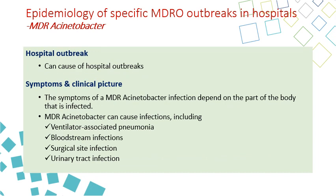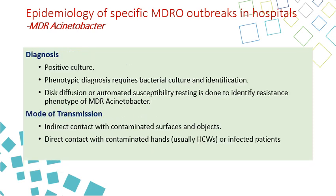Hospital outbreaks can be caused by Acinetobacter, and the symptoms depend on the body site affected. Common infections include VAP, CLABSI, SSI, and CAUTI. Diagnosis is by positive culture, phenotypic diagnosis, and resistance is determined by disc diffusion or automated susceptibility testing. Transmission is direct and indirect — direct through contaminated hands of healthcare workers, and indirect by touching contaminated surfaces and objects.